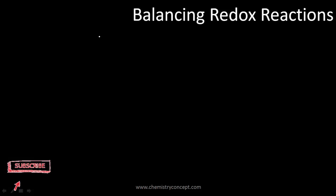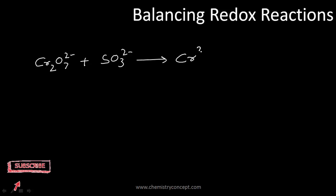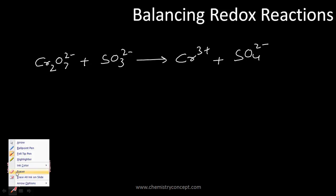Welcome to Chemistry Concepts. Today we'll discuss how to balance a chemical redox reaction, using the example of Cr₂O₇²⁻ (dichromate ions) reacting with SO₃²⁻ to give Cr³⁺ and SO₄²⁻. This is an ionic redox equation which we have to balance.